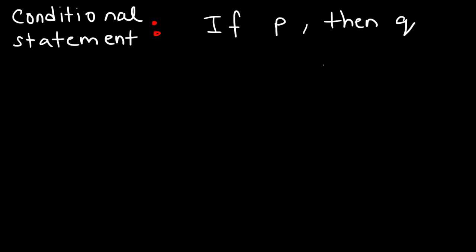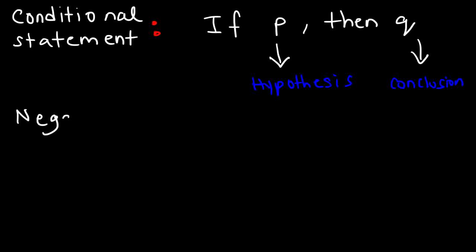The part that comes after the 'if,' which is denoted by P, is the hypothesis. The stuff that comes after Q is known as the conclusion. You also need to be familiar with the symbol associated with negation. This symbol means 'not P.' For example, if it is sunny outside, the negation of that statement is it is not sunny outside. If you see this symbol, it just means it's not happening — it's a negation.